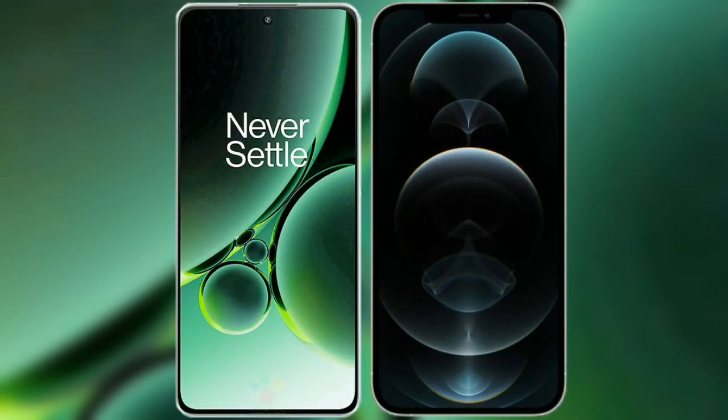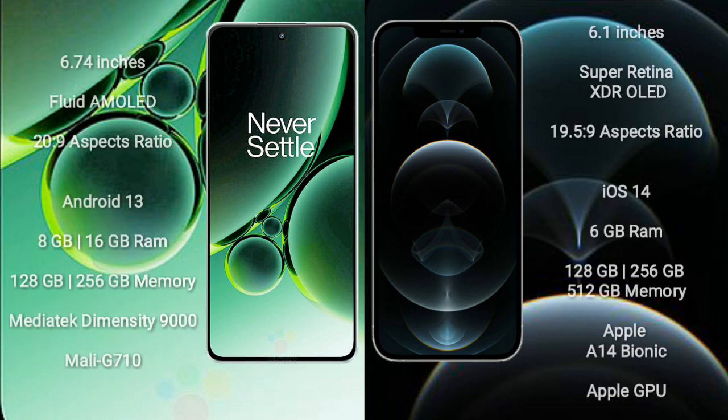I will compare the new OnePlus Nord 3 with iPhone 12 Pro. OnePlus Nord 3 comes with a 6.74-inch flat AMOLED display with an aspect ratio of 20:9. iPhone 12 Pro comes with a 6.1-inch Super Retina XDR OLED display with an aspect ratio of 19.5:9.